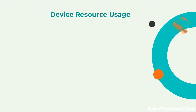First we will look into device resource usage. The major aspect would be CPU usage — whenever we are using the application, at that particular instance, what is the CPU usage of the application? That is the matrix we are going to collect. Next would always be memory, because what type of memory usage is consumed by a particular functionality will also play a major role for performance.